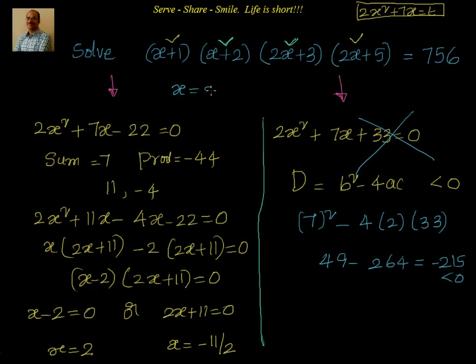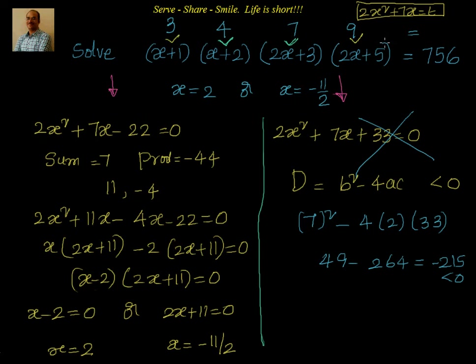So the solutions to x plus 1 into x plus 2 into 2x plus 3 into 2x plus 5 equal to 756 are x equal to 2 or x equal to minus 11 by 2. We can verify x equal to 2: 2 plus 1 is 3, 2 plus 2 is 4, 2 into 2 plus 3 is 7, 2 into 2 plus 5 is 9. Multiplying: 3 times 4 is 12, times 7 is 84, times 9 is exactly 756.